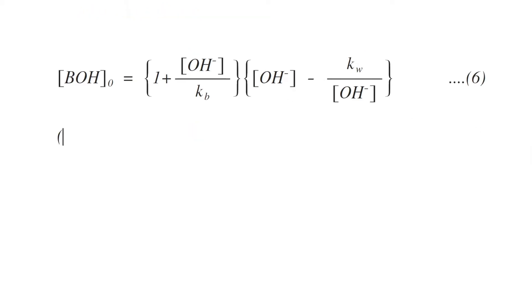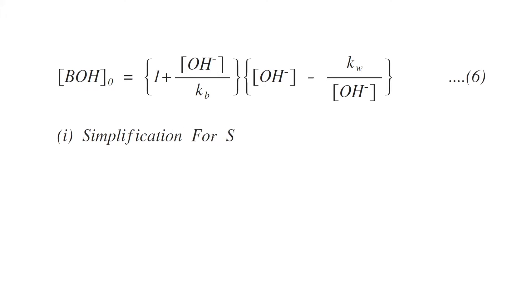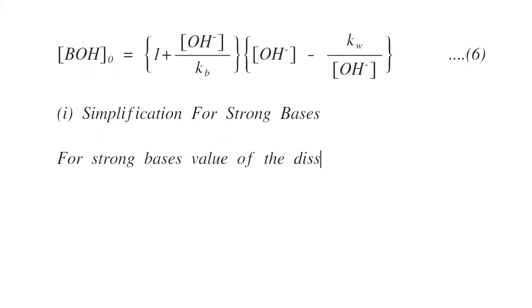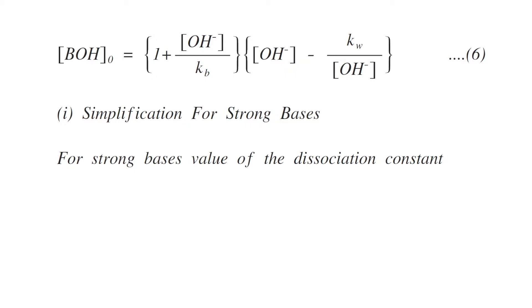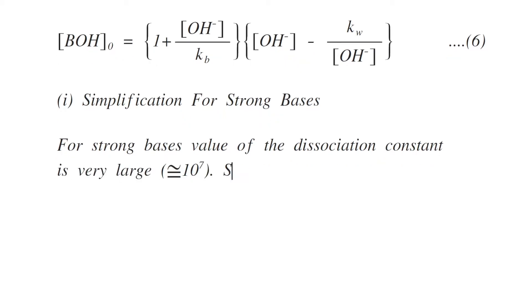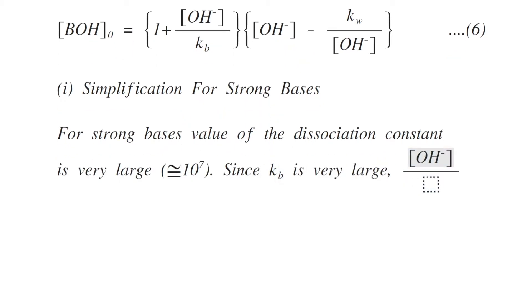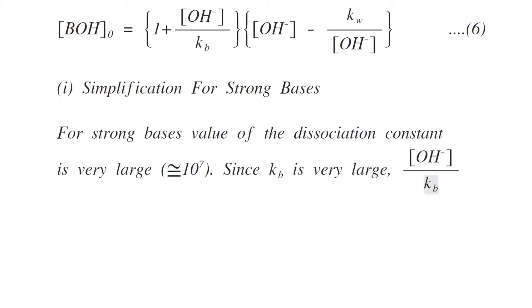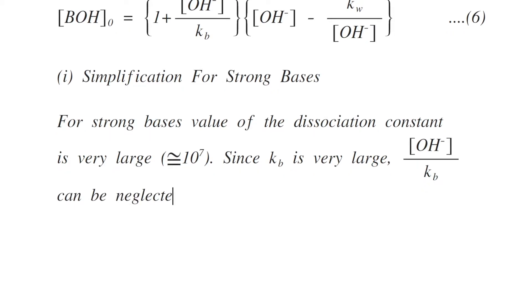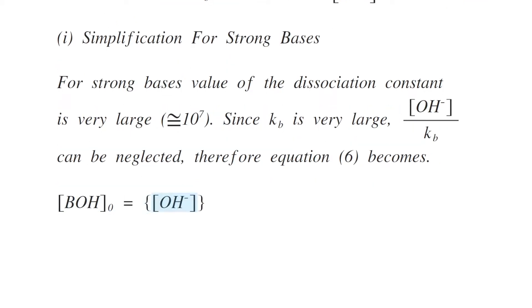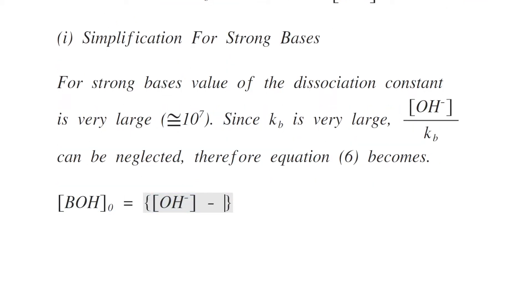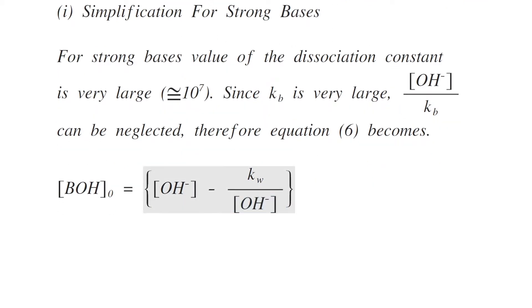For a strong base, the dissociation constant Kb is very large (above 10⁻⁷), so [OH⁻]/Kb can be neglected. Therefore equation six reduces to [BOH]₀ equals [OH⁻] minus Kw/[OH⁻]. This is equation number seven.